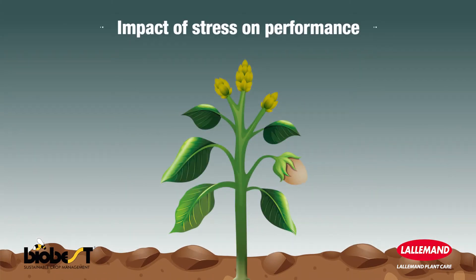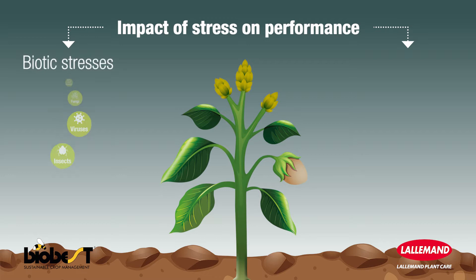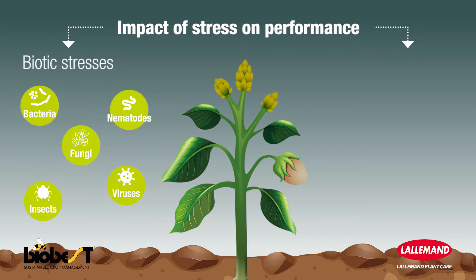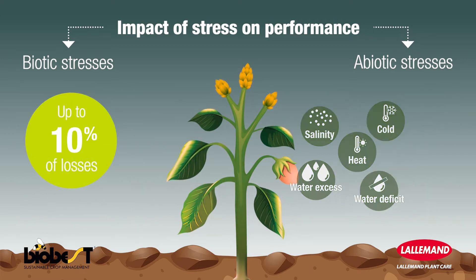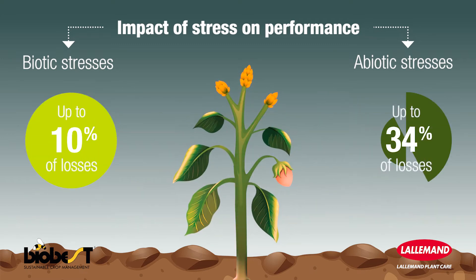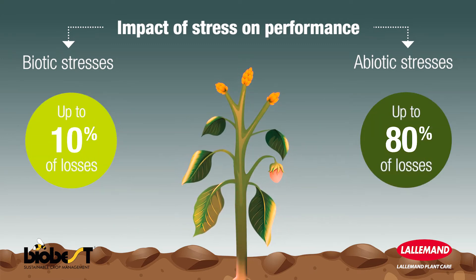The plant is subjected to different types of stress: biotic stresses and abiotic stresses. These stresses can impact yield potential by up to 90%, and abiotic stresses account for most of these losses.